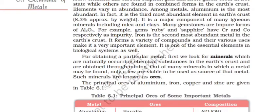Iron is the second most abundant metal in the Earth's crust. It forms a variety of compounds, and their various uses make it an important element. It is one of the essential elements in the biological systems as well.